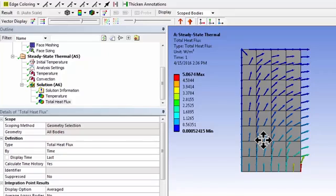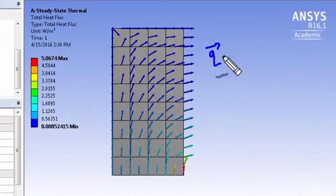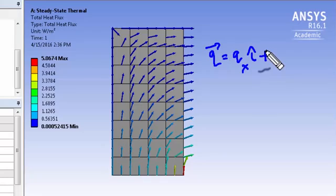Let's think about that. Let me annotate this. Heat flux is a vector, so you have the heat flux in the x direction, which is the heat flow per unit area in the x direction, and then you have heat flux similarly in the y direction.